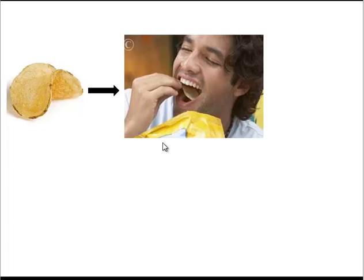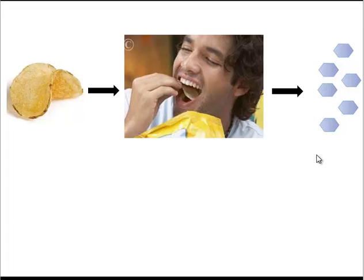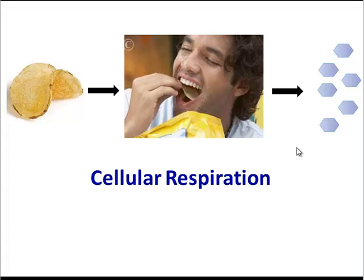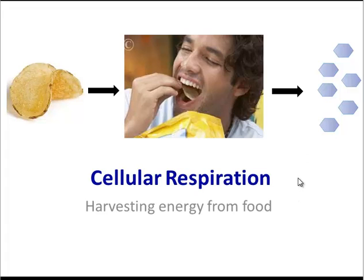So far in our energy unit, we've learned that the starch in potato chips can be broken down by the digestive system into its monomers, glucose. The reason that happens is because glucose contains energy that cells need. However, the energy in glucose is useless unless cells turn it into a more usable form. So in this video, we're going to explore the process of cellular respiration, because this enables cells to harvest the energy in food.